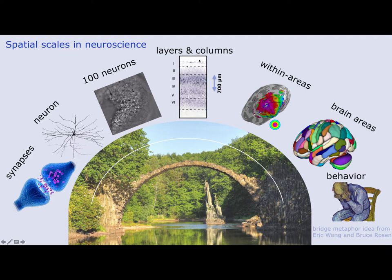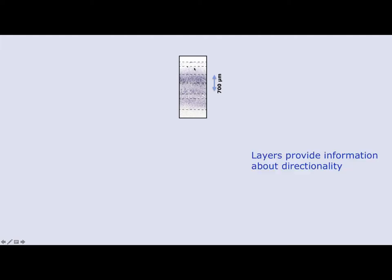To get there, I'm really willing to make compromises. I don't really care yet if it's not a whole-brain method or if the TR is bigger than three seconds. I think we should first try to close the bridge, and then as soon as it's stable, build on top of that. The reason I'm so fascinated about these layers and columns is because they open up a whole new window to investigate brain systems.